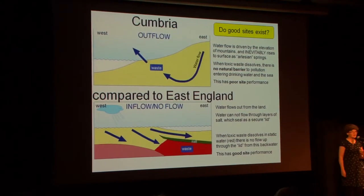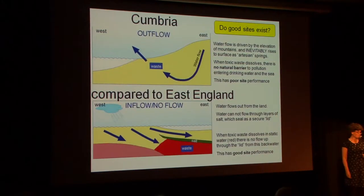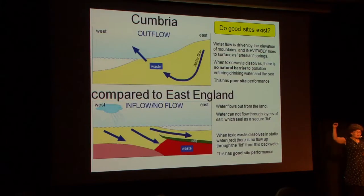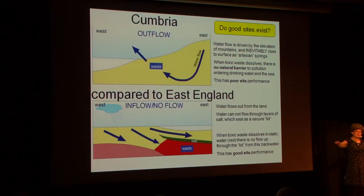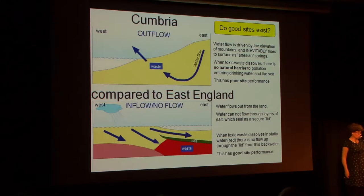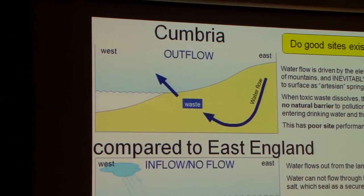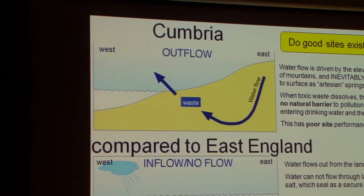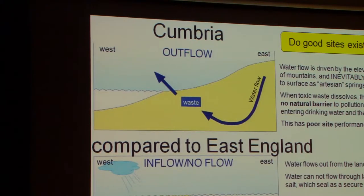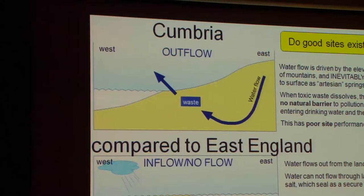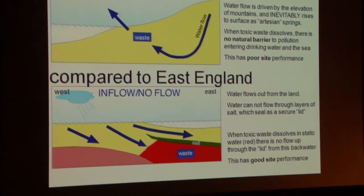The problem with that is that you also have hills in Cumbria, and the hills provide a level of water pressure — what's called a head — which pushes water down through the hills but then allows it to come up through the repository. So the water flow looks like the top diagram, not the lower diagram from somewhere in the east of England where water tends to flow downwards. You're in an area where there's no natural barrier for radioactivity coming to the surface.